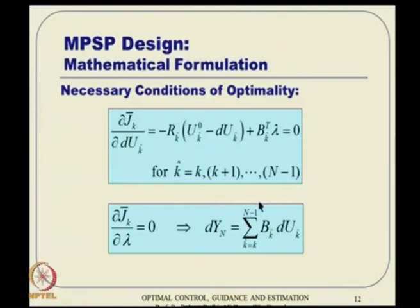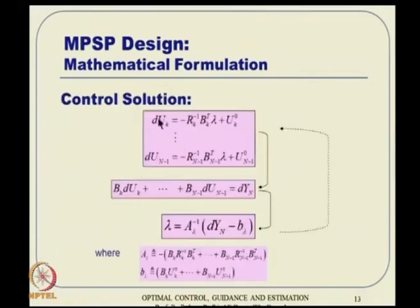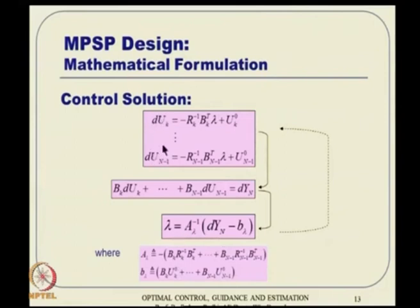We solve the two equations by first expressing du in terms of λ, then substituting into the constraint equation to solve for λ. Once λ is known, all du_k values are known. λ is solved as λ = A_λ^{−1} · B_λ, where A_λ and B_λ are defined in terms of the sensitivity matrices, R_k^{−1}, and the previous control history. Knowing the previous values and sensitivity matrices, we can very quickly compute λ, and from λ, all control history updates are obtained.